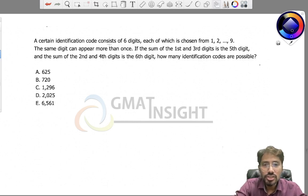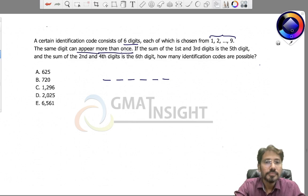A certain identification code consists of six digits. Each digit is chosen from 1 to 9—zero is not allowed. The same digit can appear more than once, so repetition is allowed. If the sum of the first and third digits...